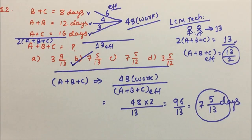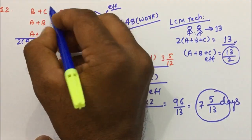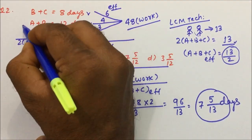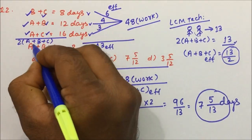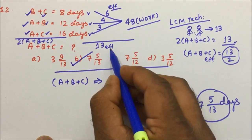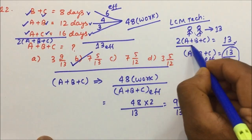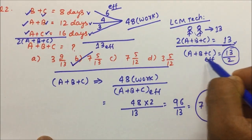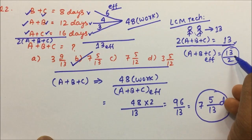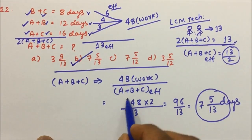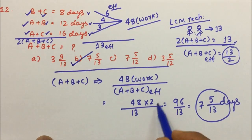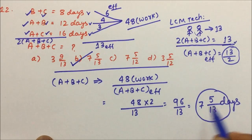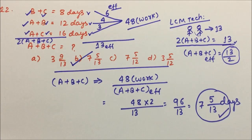So what we did: we took the LCM, and when we add the three pair efficiencies, 2 times A, 2 times B, and 2 times C appear — so 2×(A+B+C) efficiency = 13, giving 13/2 per set. Then 48 ÷ (13/2) = 96/13 = 7 5/13 days. Thanks for watching the video.